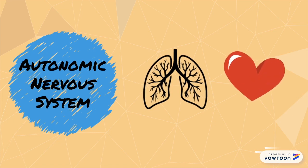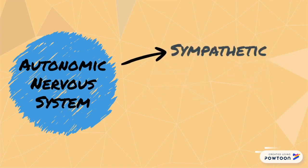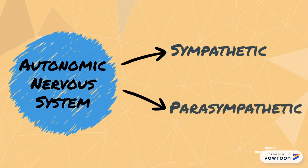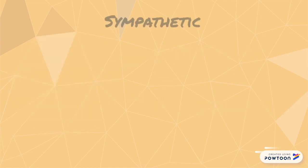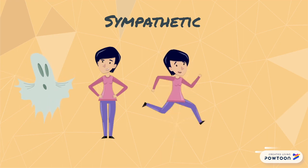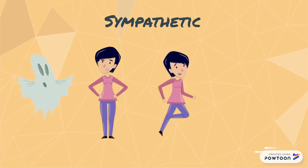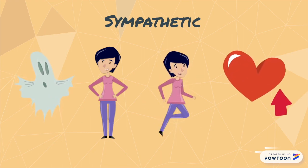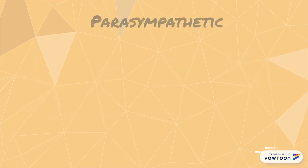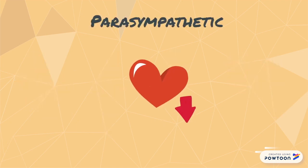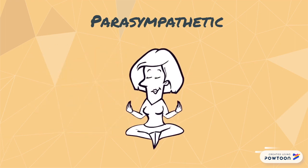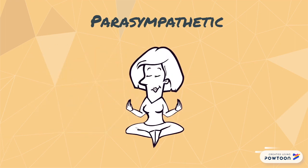The autonomic nervous system is split into two divisions: sympathetic and parasympathetic. The sympathetic system produces the fight or flight responses that we associate with emergency situations, such as increased heart rate and breathing. The parasympathetic system produces responses of the opposite effect — it helps calm the body down and we use it for everyday reactions.